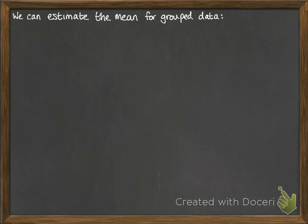We might also get the data presented to us in groups, classes, or intervals, and we can estimate a mean from here. We can't give an exact mean because we don't know exactly what the values were within that group, but we can estimate it.